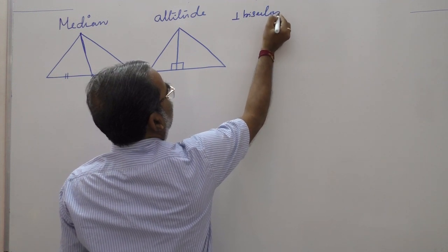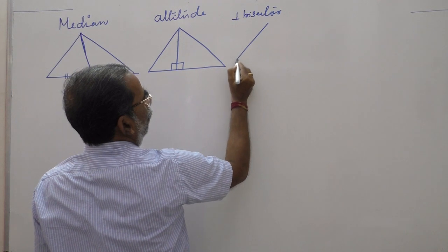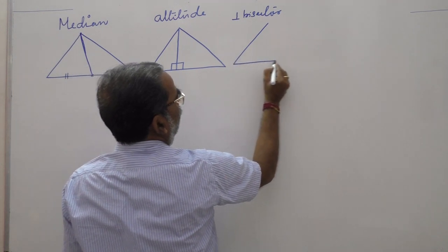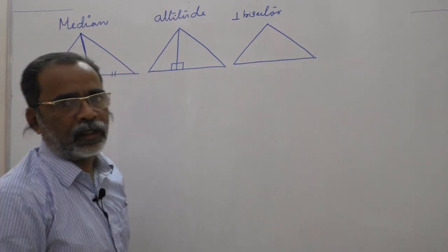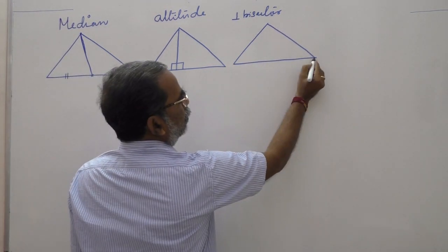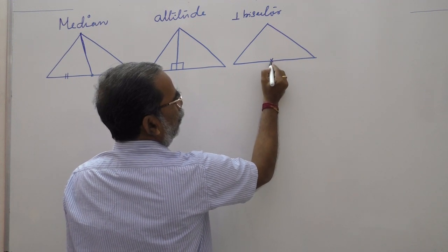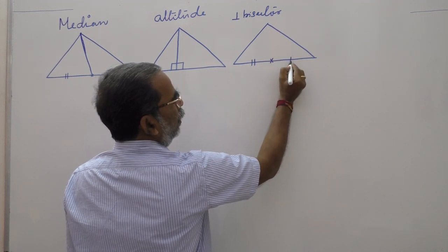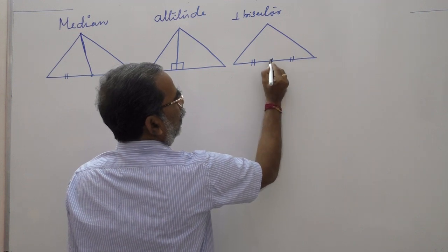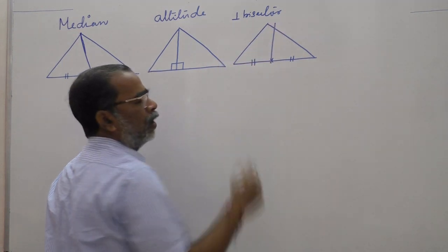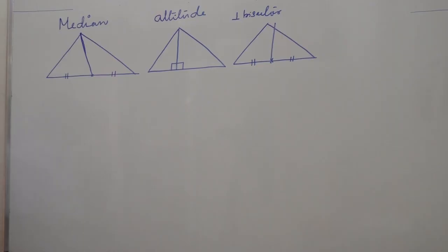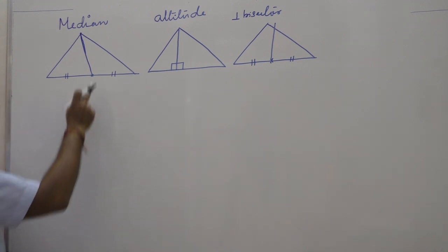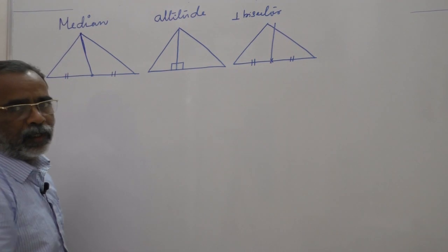Next, perpendicular bisector of a side. If you take a side, the line which is perpendicular to it and which bisects it is called the perpendicular bisector of that side. Similarly, there will be two more perpendicular bisectors for the other two sides.